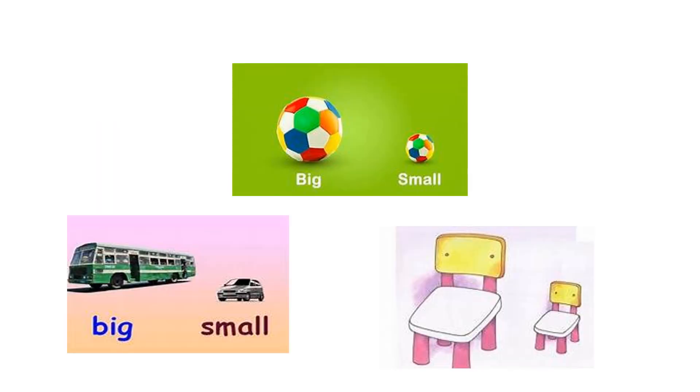A few more examples of big and small things. A big ball and a small ball. A big bus and a small car. A big chair and a small chair.